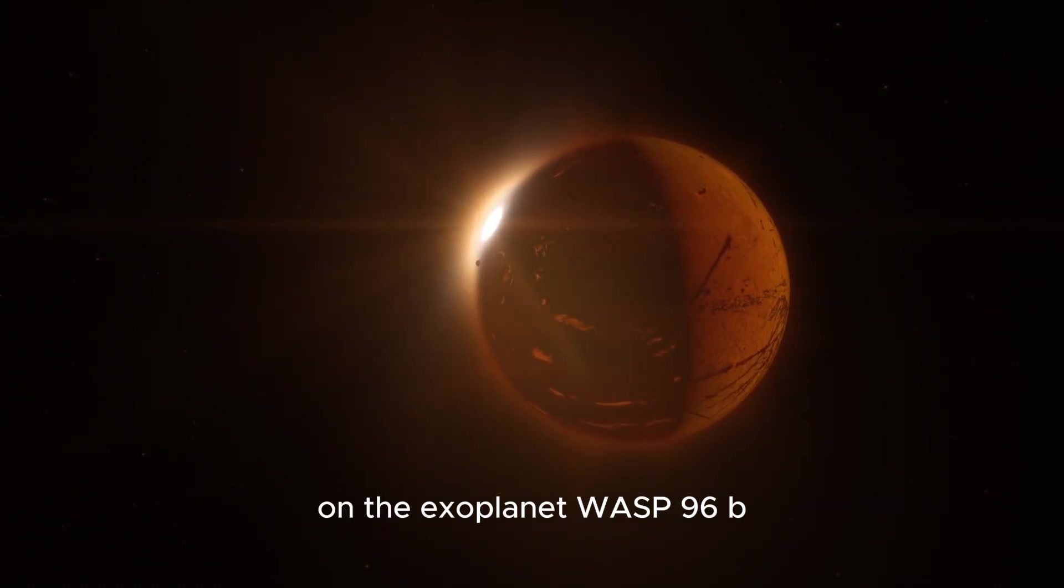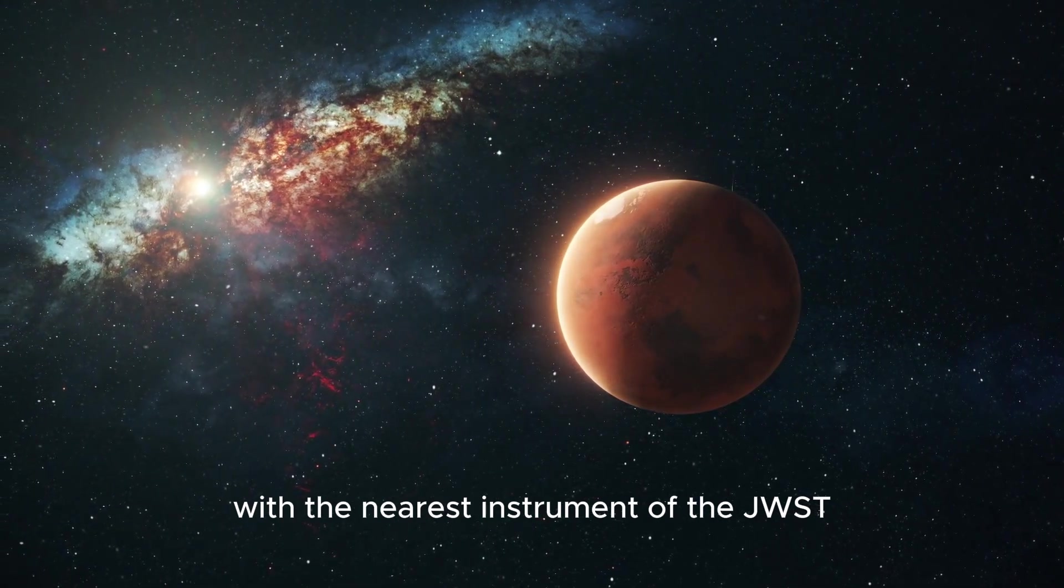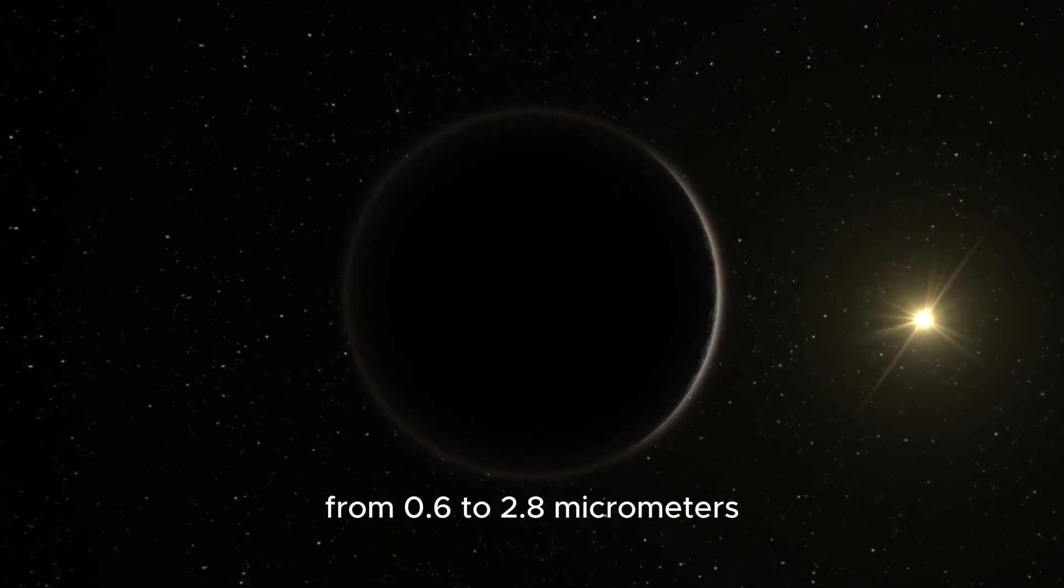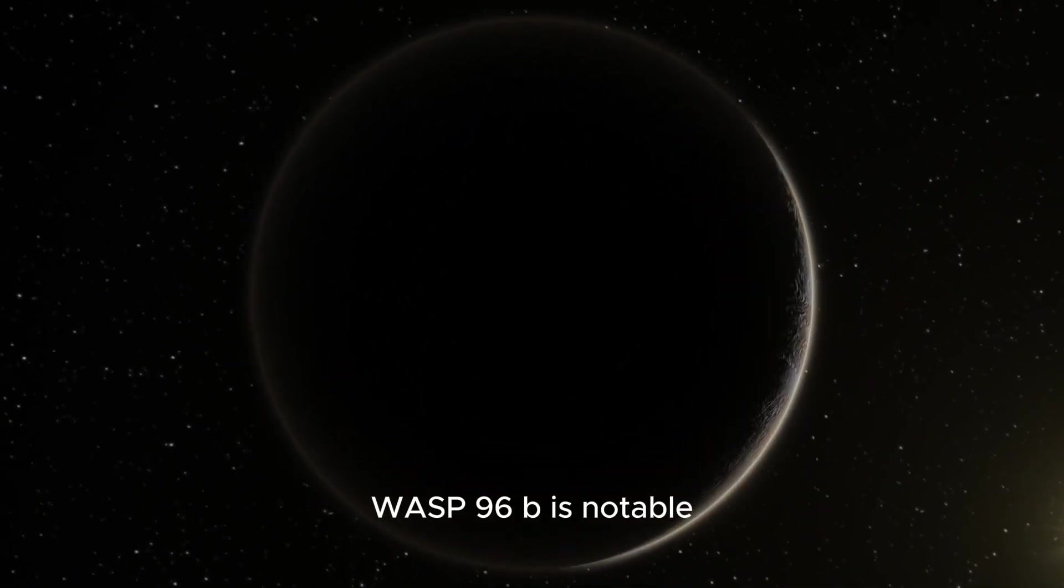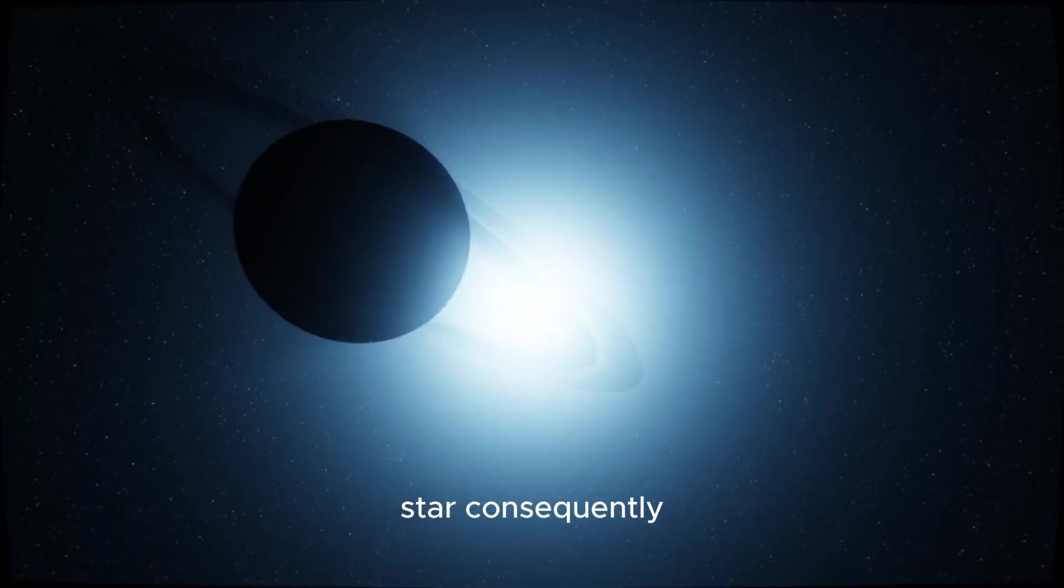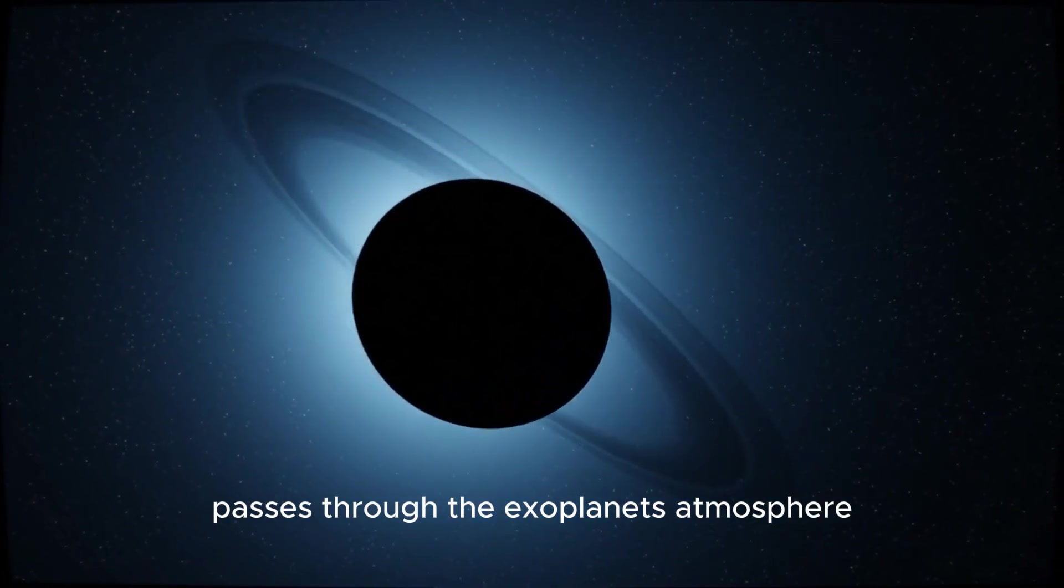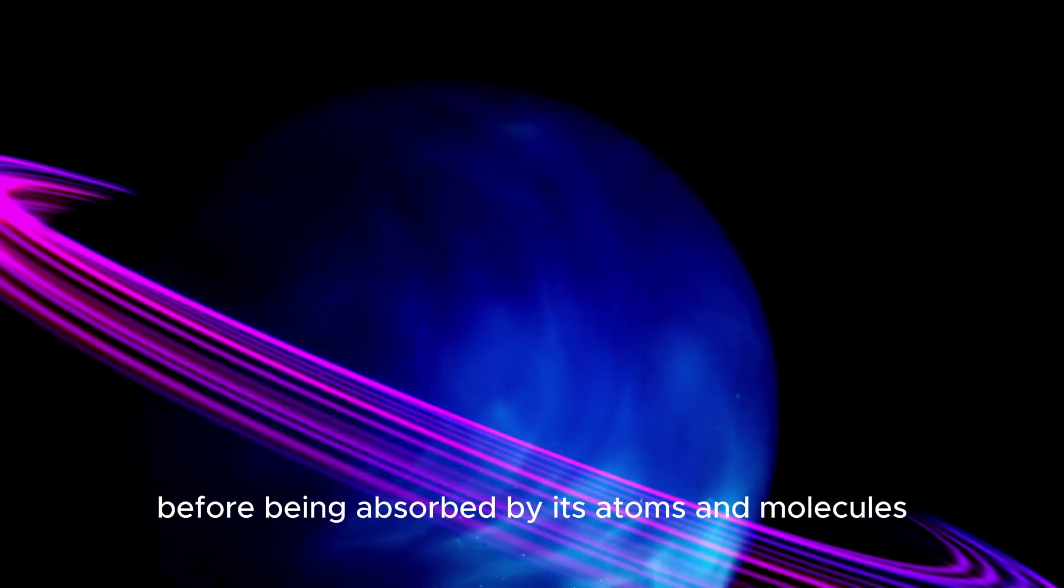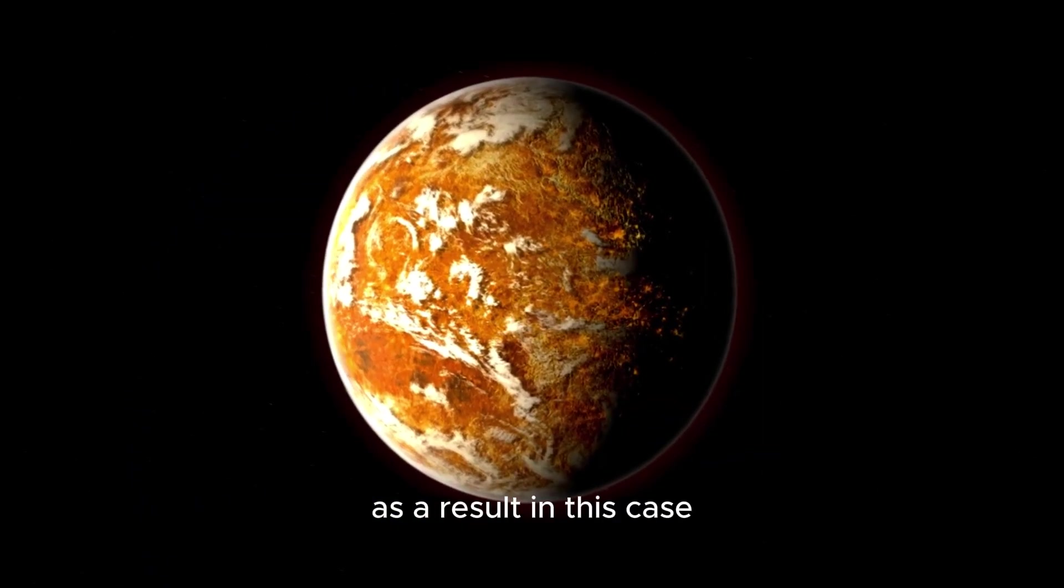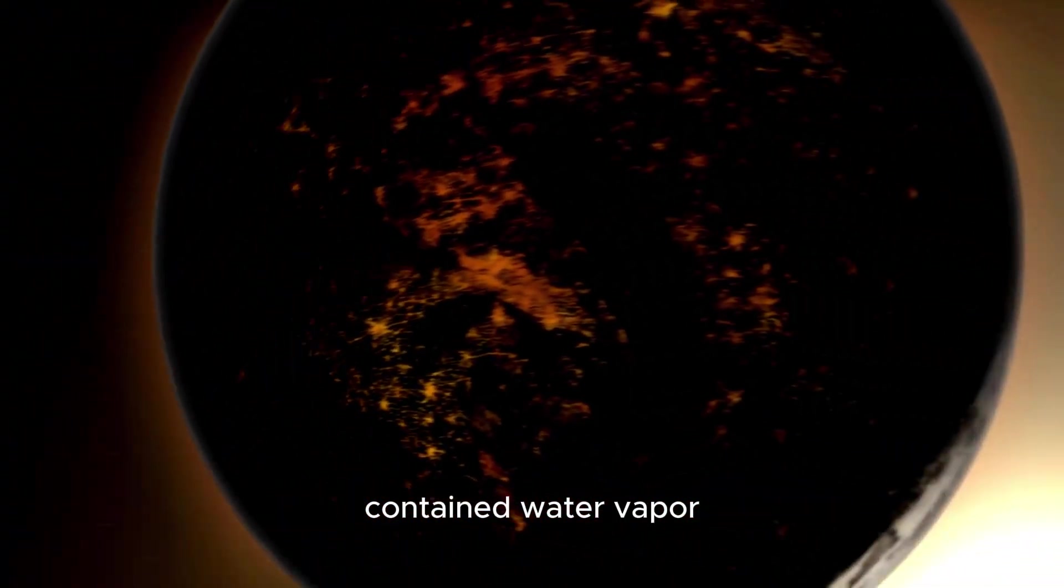On the exoplanet WASP 96b, astronomers performed precisely this with the nearest instrument of the JWST. The dispersion of infrared light from 0.6 to 2.8 micrometers was displayed on the resulting graph. WASP 96b is notable since it frequently crosses in front of its parent star. Consequently, only a small fraction of the star's light passes through the exoplanet's atmosphere before being absorbed by its atoms and molecules at their preferred wavelengths. The intensity at those wavelengths decreases as a result. In this case, the JWST showed that the atmosphere of WASP 96b contained water vapor.